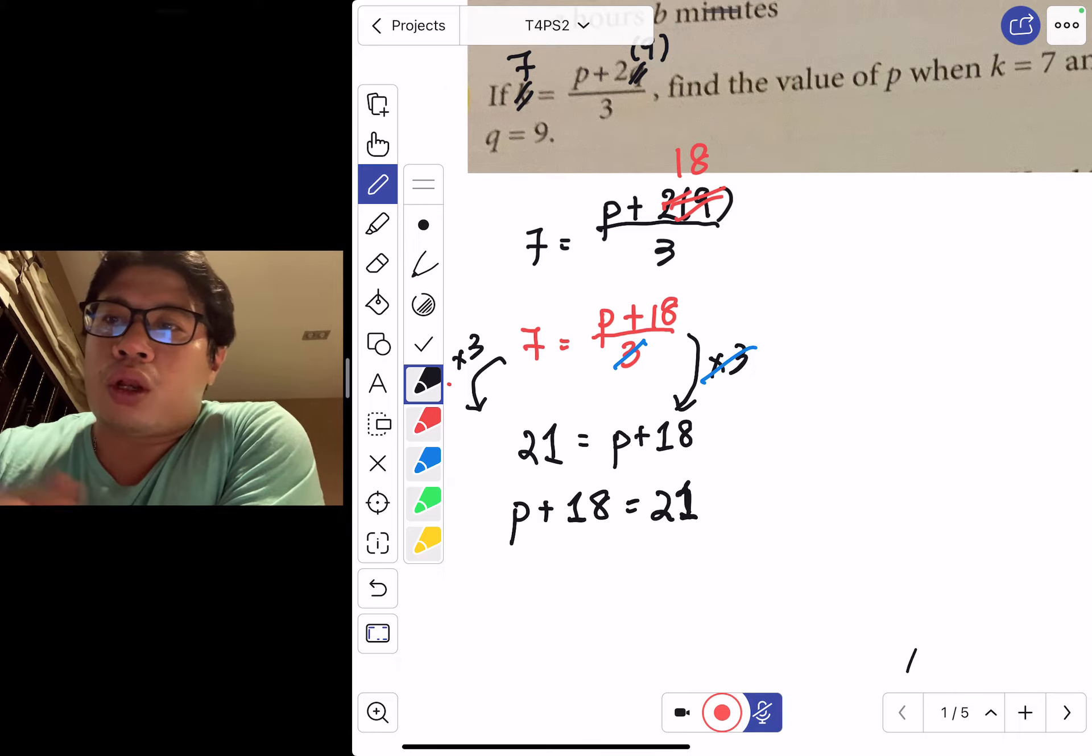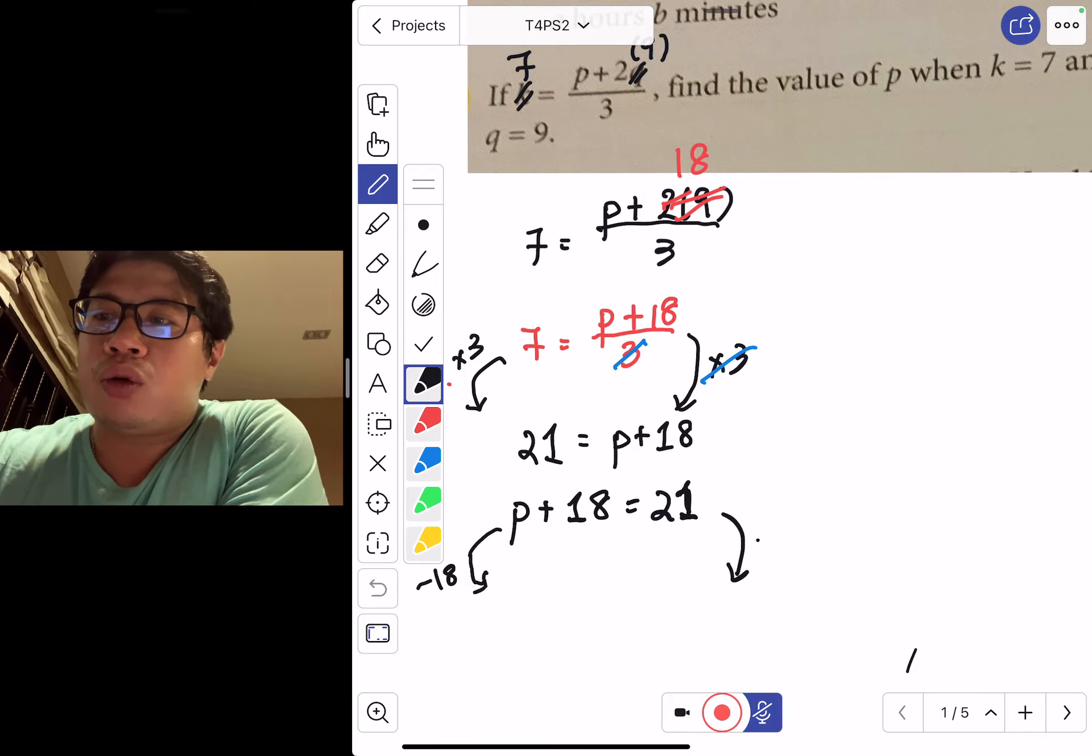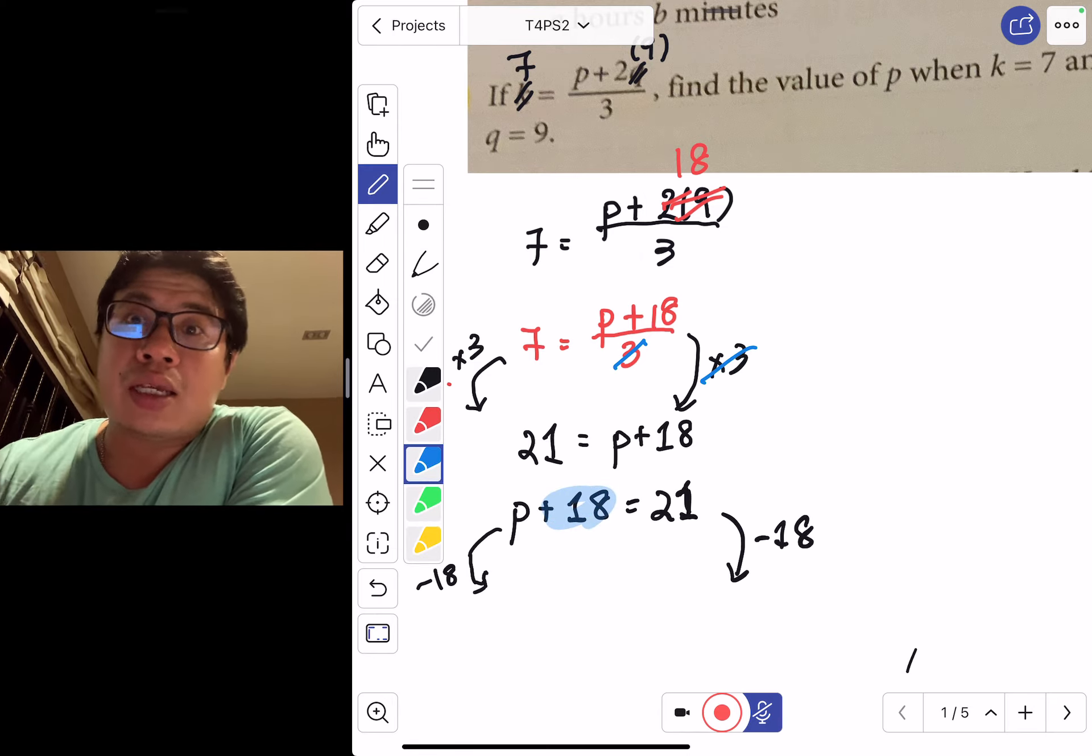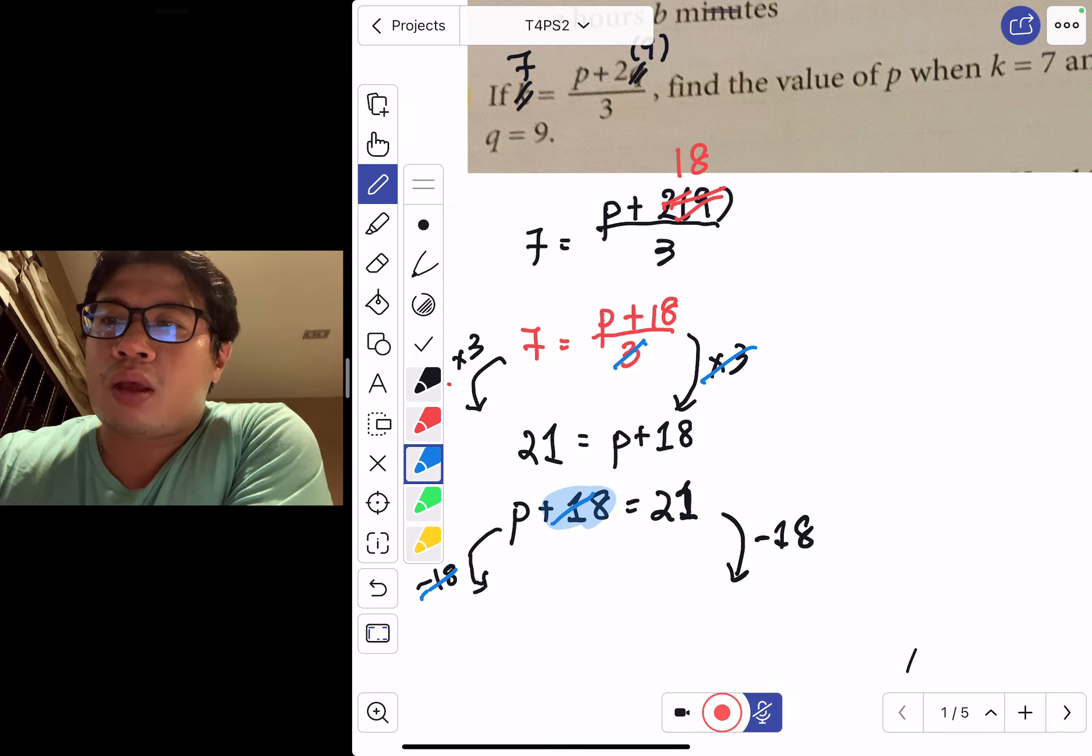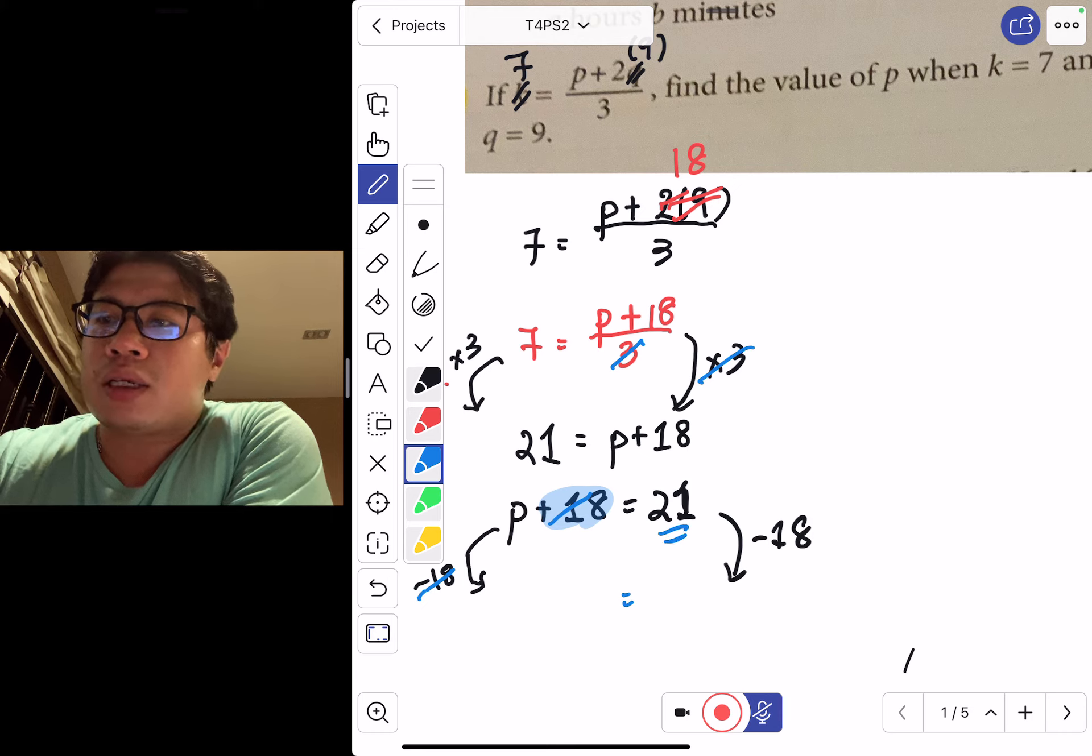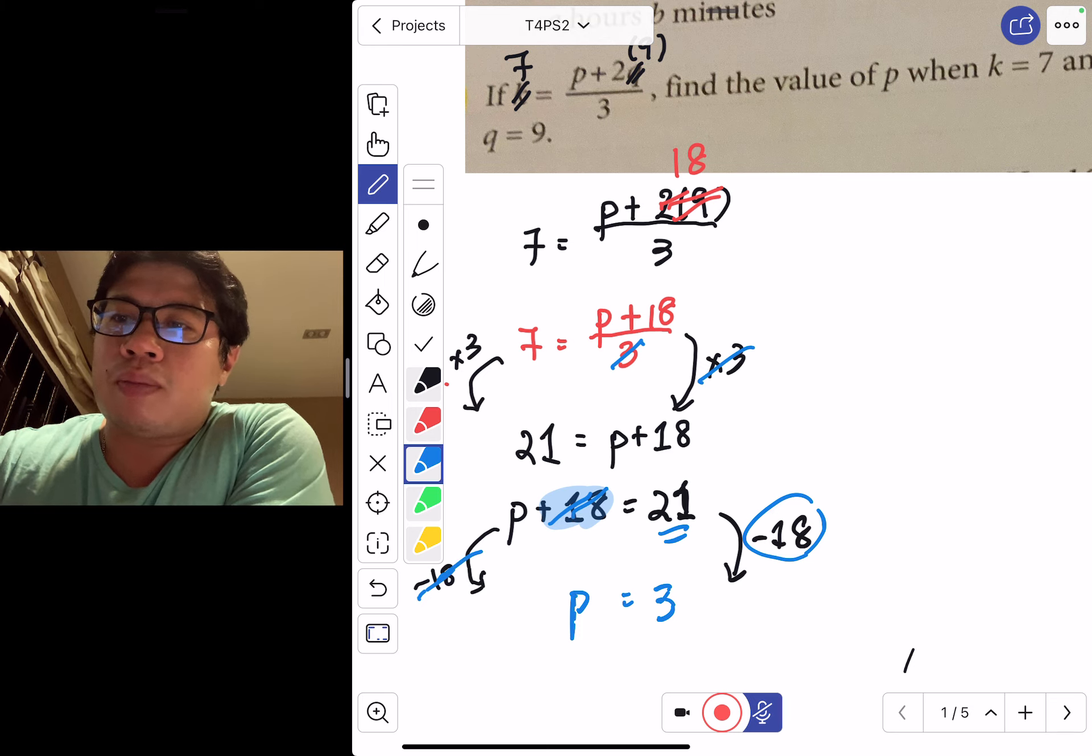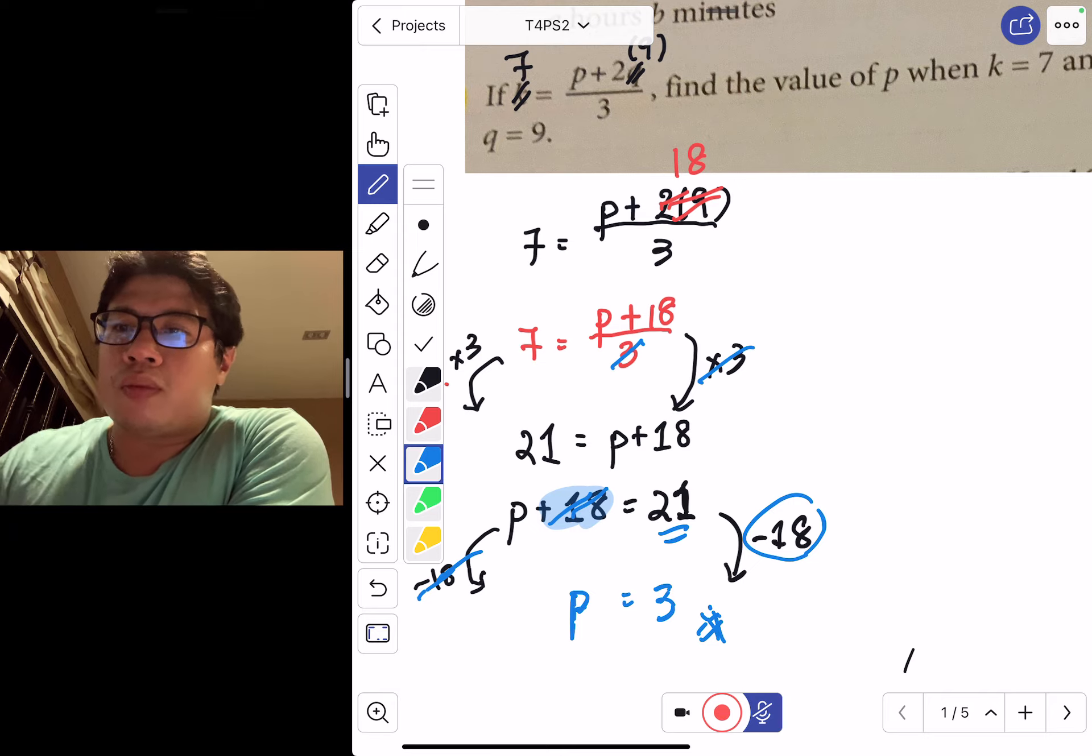The next step: if you subtract 18 on both sides, because I know I want to find the value of p, I have to get rid of this 18 here. This is a plus 18, so I'll reverse by doing minus 18 on both sides. 21 minus 18 gives me 3, and p plus 18 minus 18 gives me p. So the value of p equals 3.